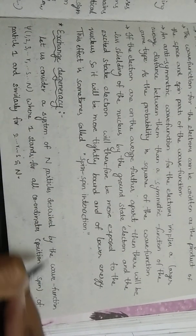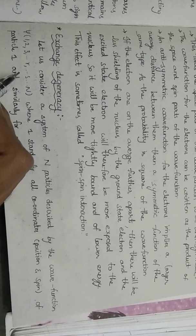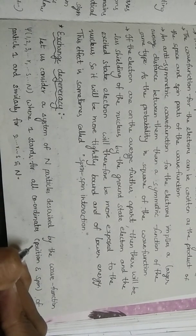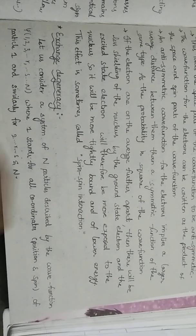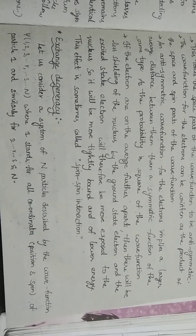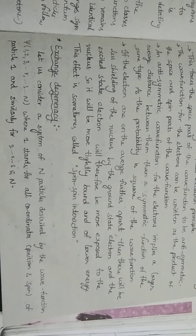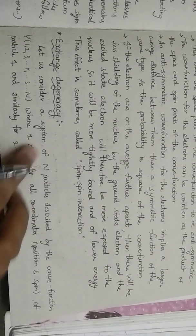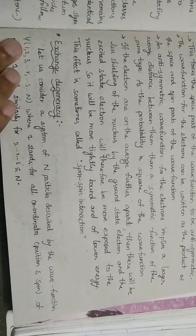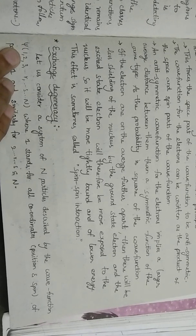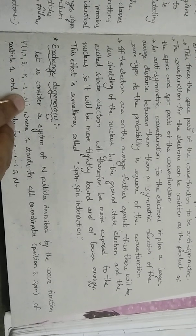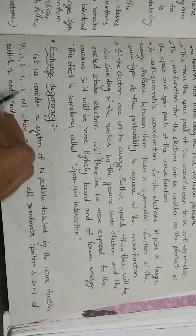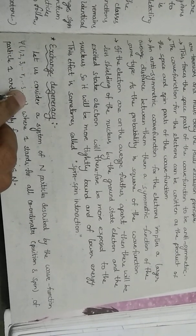Let us consider a system of n particles described by the wave function ψ(1, 2, 3, ..., r, s, ..., n), where 1 stands for all coordinates — position and spin — of particle 1, and similarly for r, s, and n. So we have a system with n particles and the wave function is of the form ψ(1, 2, 3, ..., r, s, ..., n).